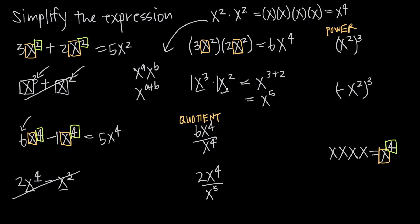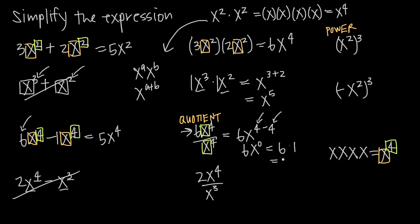The quotient rule for exponents tells us that, just like with multiplication, when we divide we don't have to have the same exponent — we only care about the bases. Here we have like bases, both x. We keep the coefficient 6 in our final answer, and then subtract the denominator exponent from the numerator exponent: x to the 4 minus 4 equals x to the 0, which equals 1, so we get 6 times 1, or just 6. In another example with different exponents, we keep the 2 and compute x to the 4 minus 3, which is x to the 1st, giving us simply 2x.